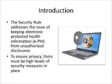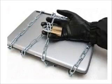The Security Rule addresses the issue of keeping electronic protected health information from unauthorized disclosures. To ensure privacy, there must be high levels of security measures in place. As we discussed in the previous lesson, we talked about the Privacy Rule, which indicates what information is to be protected. In this lesson, we're going to talk about the Security Rule and how it dictates how that information is to be protected.